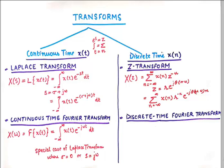For discrete time signals, the Z-transform is represented as the summation from minus infinity to infinity of x[n] · z^(−n), where z is a complex number represented by r · e^(jΩ). This again has two components: x[n] combined with r^(−n), and x[n] combined with e^(jΩ).